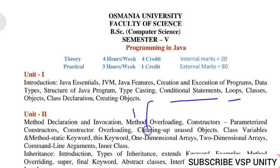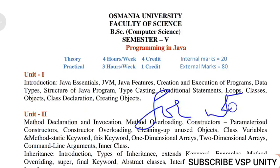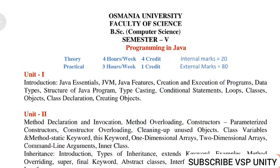In conditional statements, you can find if, if-else, and nested if-else. For loops, there are different types: for loop, while loop, and do-while loop. If you write just a definition, syntax, and one example, that's enough. There is also flowchart, but if you write just definition, syntax, and example, you will get full marks.